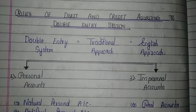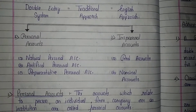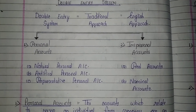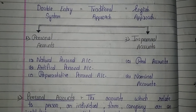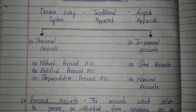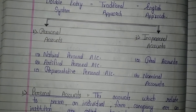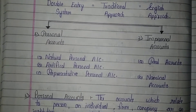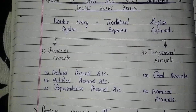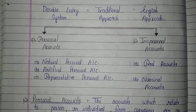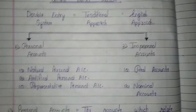Under the double entry system there are two types of accounts: personal accounts and impersonal accounts. Personal accounts give a hint that they relate to a person, a company, or an individual. Impersonal accounts cover other things like assets, losses, and gains.